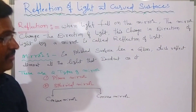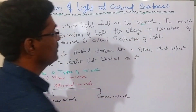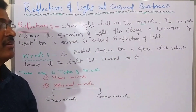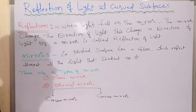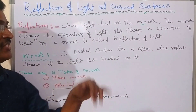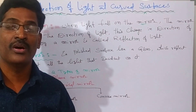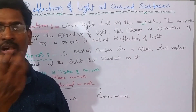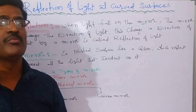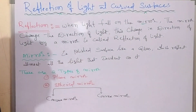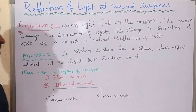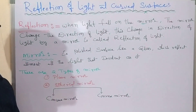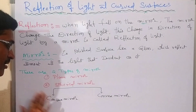Here, one point you have to know: what is a mirror? A mirror is a polished surface, like glass, that reflects almost all the light that is incident on it. However much light falls on the mirror, almost all of it is reflected — it cannot accumulate on the surface. Mirrors are of two types: one is a plane mirror, and the other is a spherical mirror. Spherical mirrors are also of two types: one is a concave mirror and the other is a convex mirror.